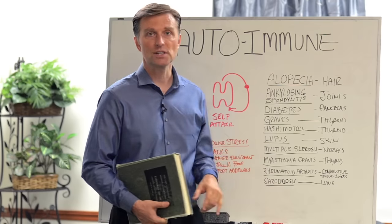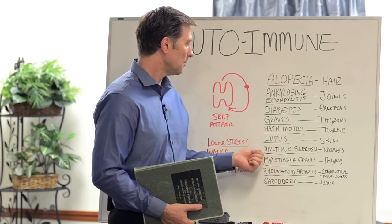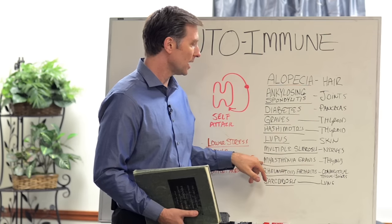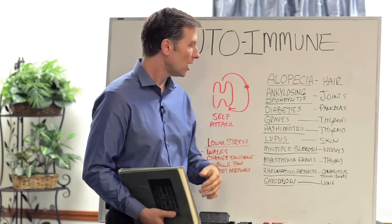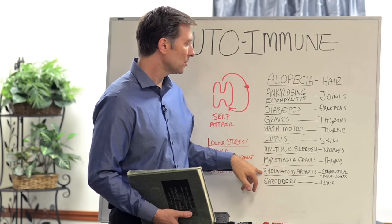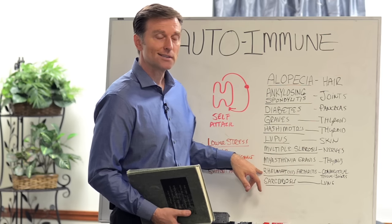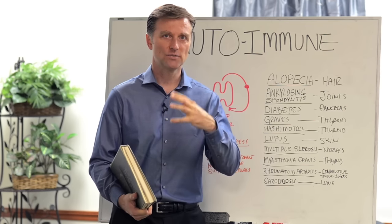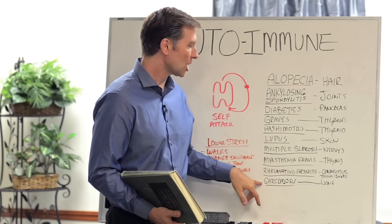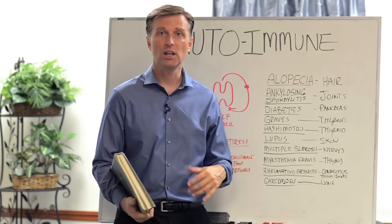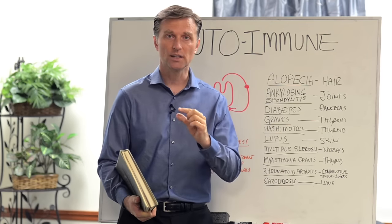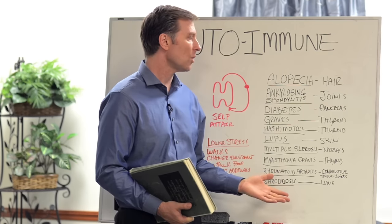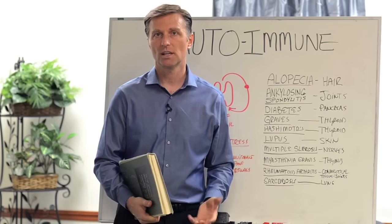And then you have lupus, which affects the skin and the joints. Multiple sclerosis, that's of the brain and the nervous system. Myasthenia gravis, that's of the thymus gland — a little immune gland on top of your heart. And then we have rheumatoid arthritis, which is a very tragic destruction of your connective tissue around the joints and can deform them. Sarcoidosis is of the lung — you have these little tumors in the lung that the antibodies are attacking. Those are just a small sample of different conditions.